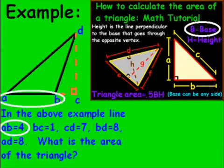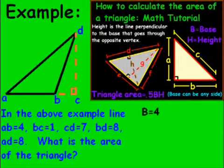And the base of the triangle is AB, which I've circled there. Now, AB equals 4. So B is going to equal 4. Our base is going to be 4. Now, we need to figure out what the height is.